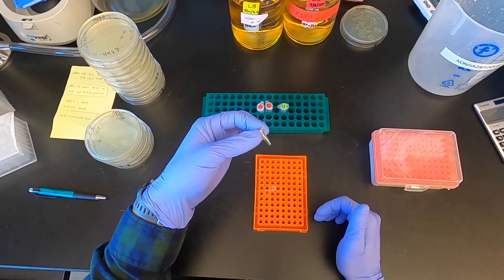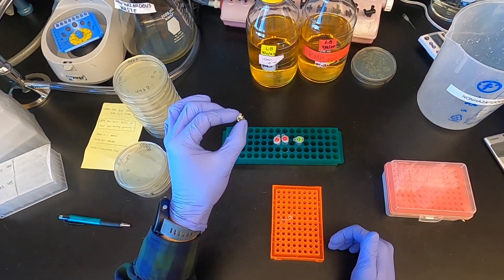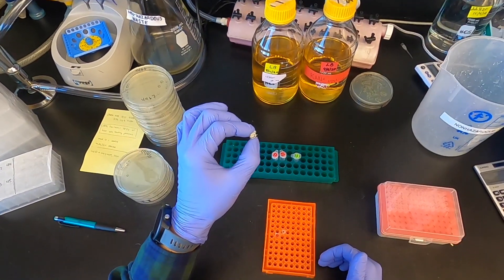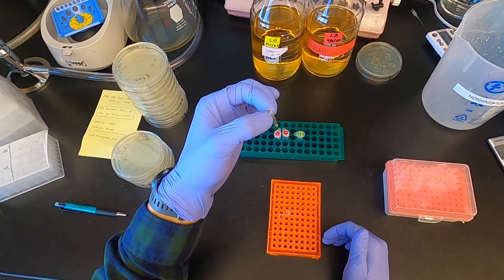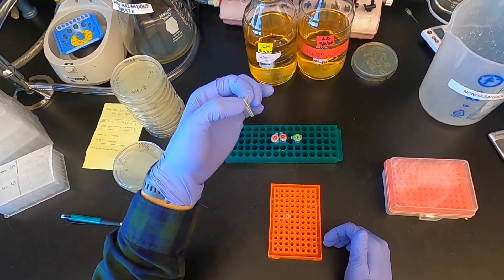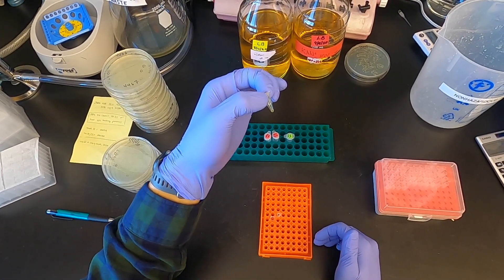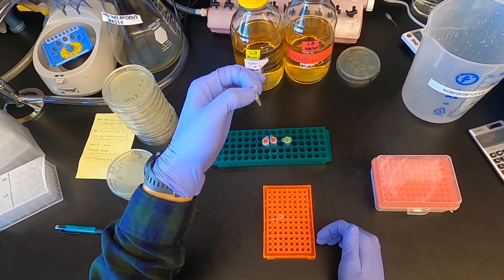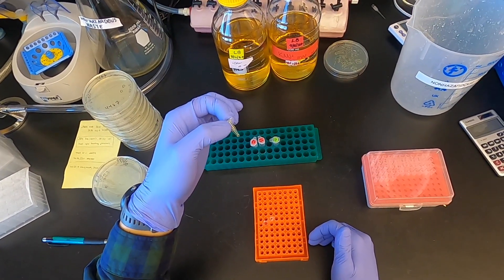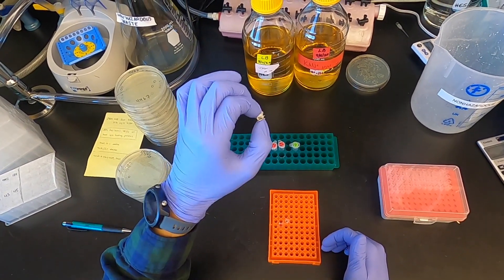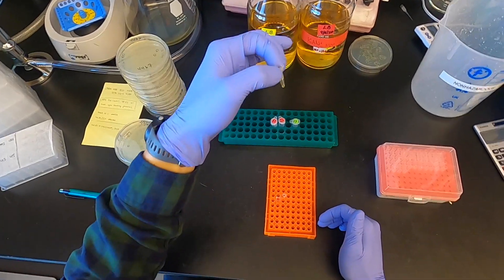I also have some T4 ligase buffer here, plus PEG 3350. We aliquot these out into 6 microliter aliquots, just because repeated freeze-thawing of T4 DNA ligase denatures the ATP. So these are single-use aliquots, 6 microliters each.